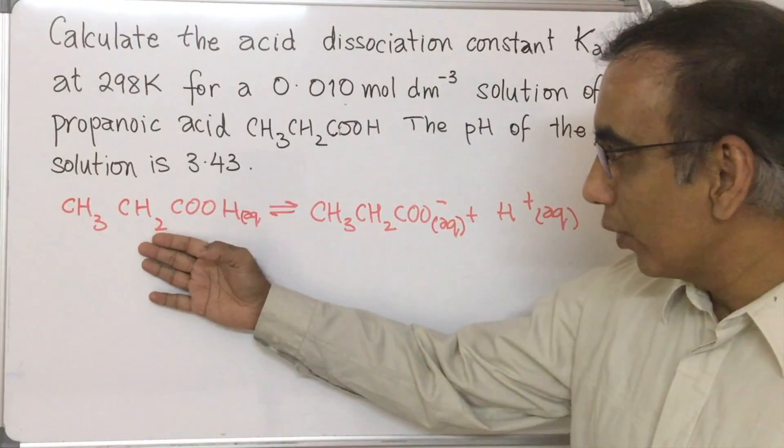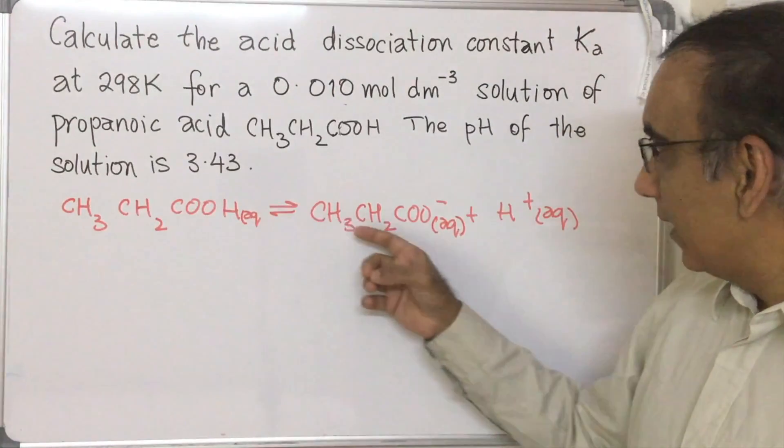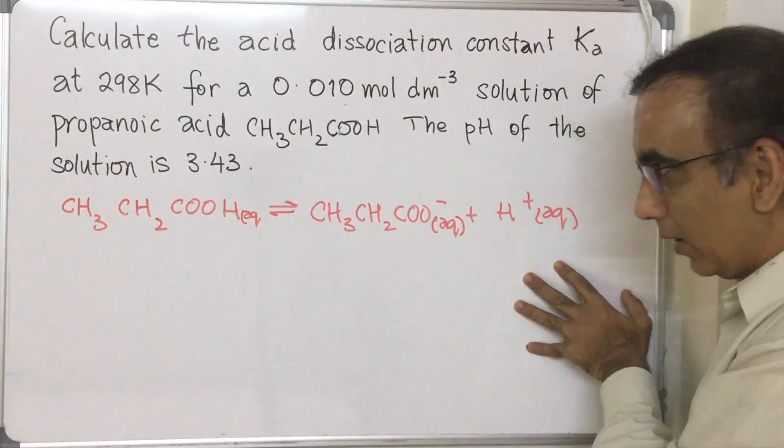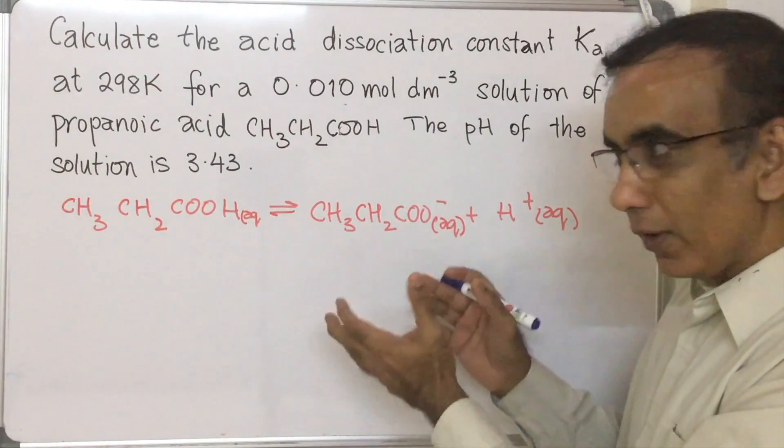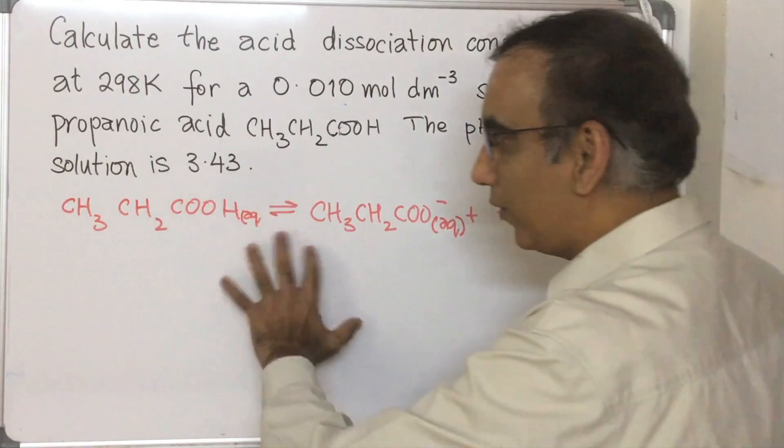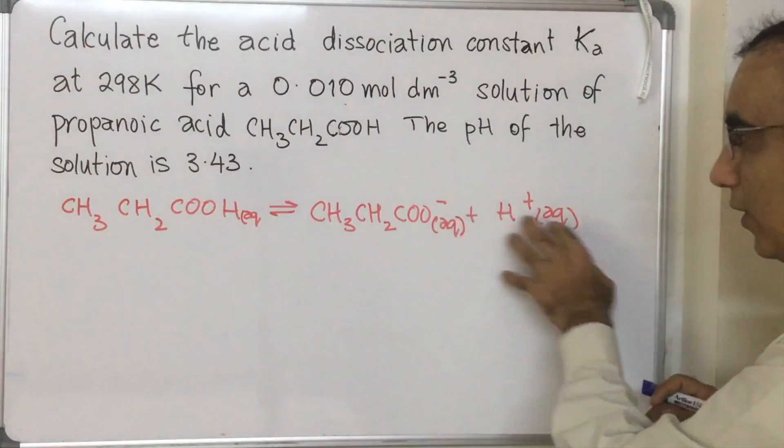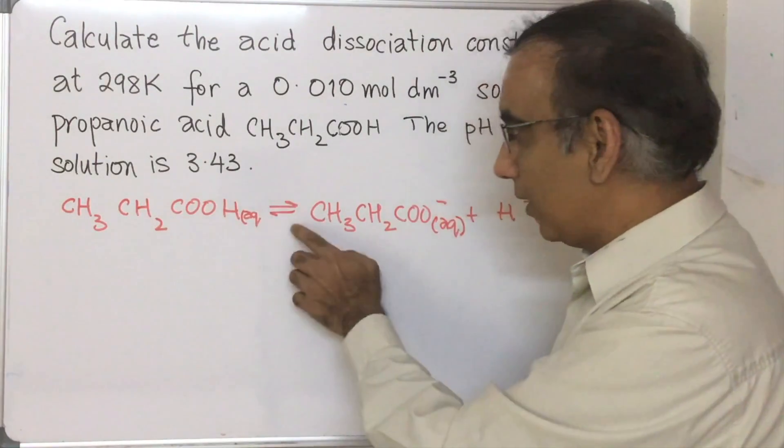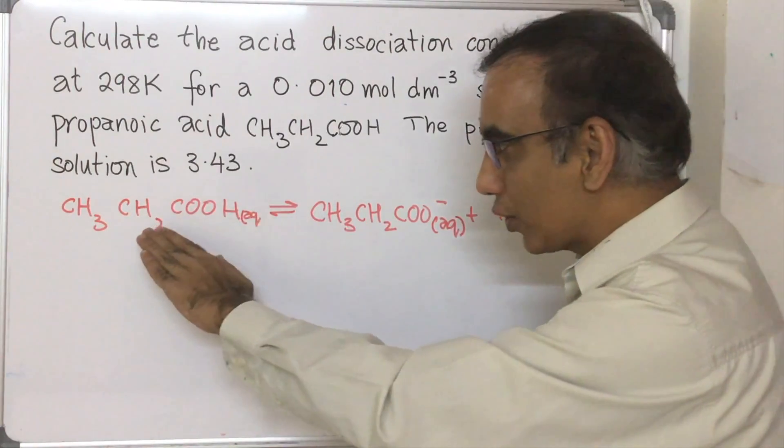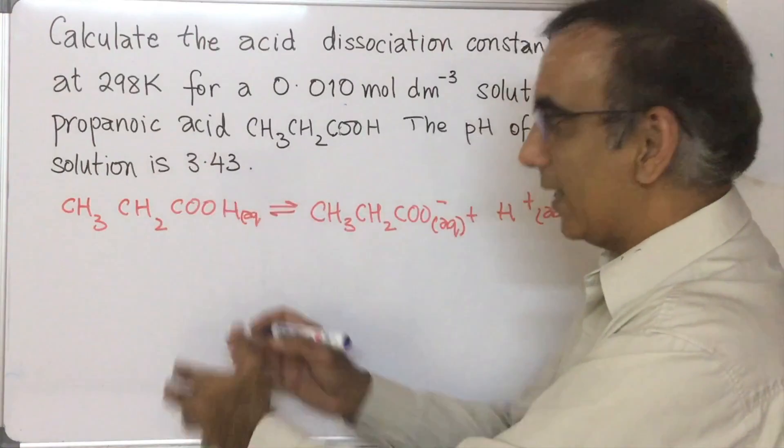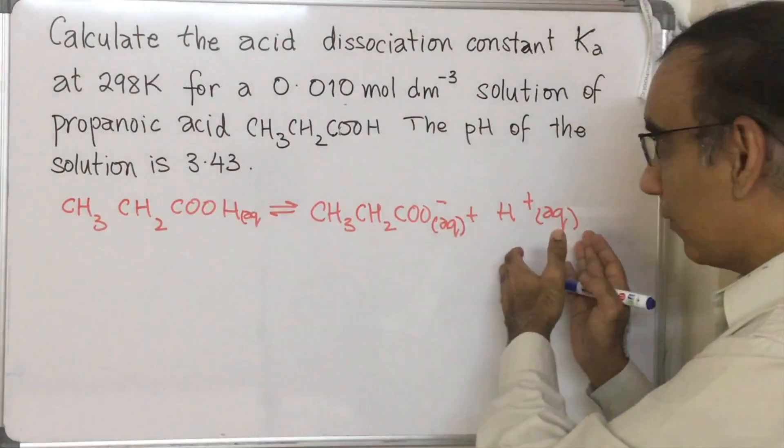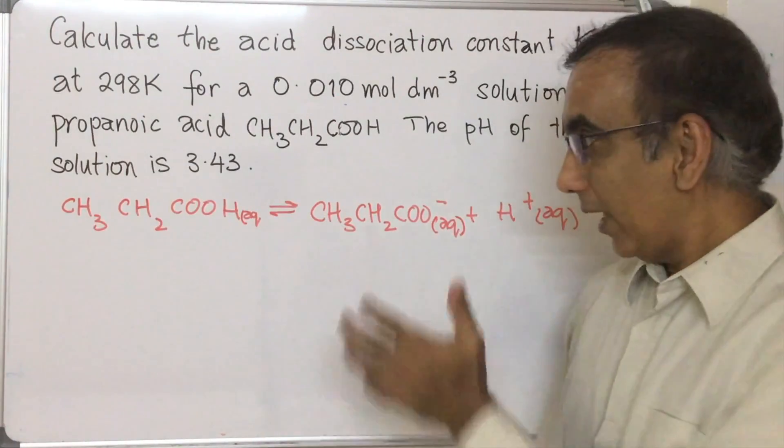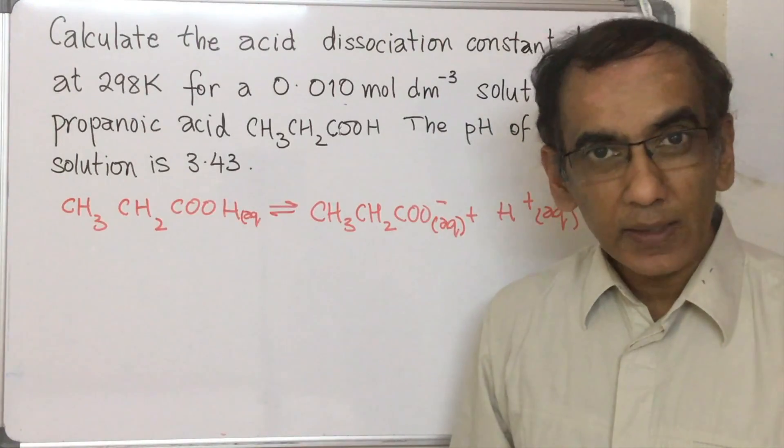Well here of course you have propanoic acid, this reversible sign, and then you have the two ions that this would dissociate into. But what this shows to you is that if propanoic acid is sitting in solution, then not all of this entity is converted into these two entities, which is the case with a strong acid. So if we were to write this down for a strong acid, we won't have this reversible arrow here which shows that some of the propanoic acid is in this form and some is in this form, which means it's not completely dissociated.